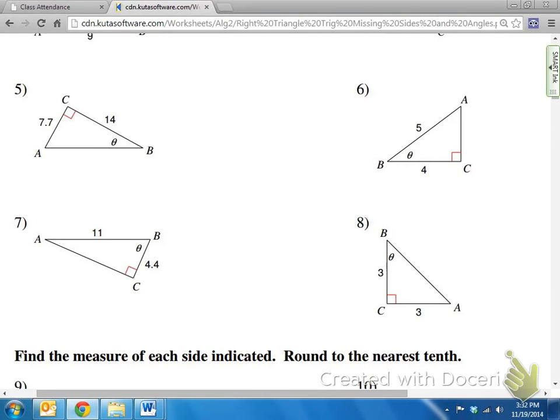All right, so we're dealing with right triangle trigonometry, and we need to find either the missing side or the missing angle, or in some questions, we need to find everything, so all the sides and the angles. In these particular problems, 5 through 8, all we need to do is find the missing angle.